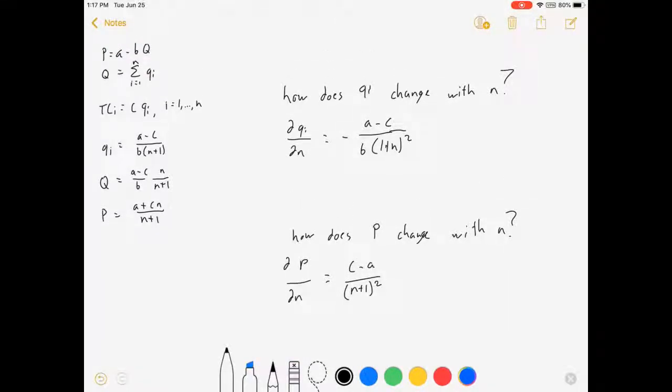Now, I could just as well ask about any variable I want to. DQI is going to follow this format. If I want to see how QI changes with N, I take the derivative of QI with respect to N. If I want to see how P changes with N, I take the derivative of P with respect to N.